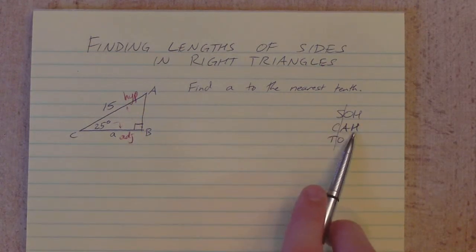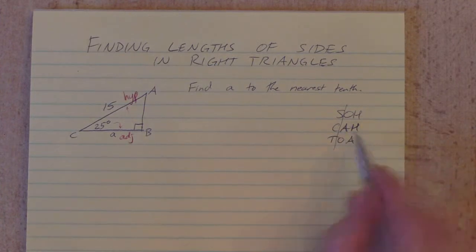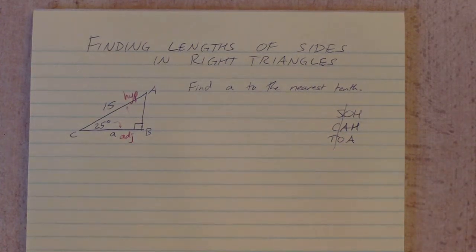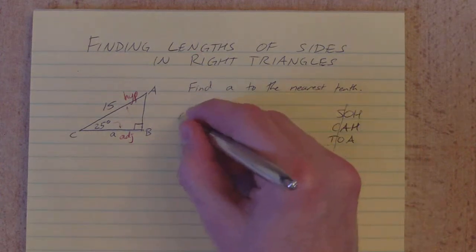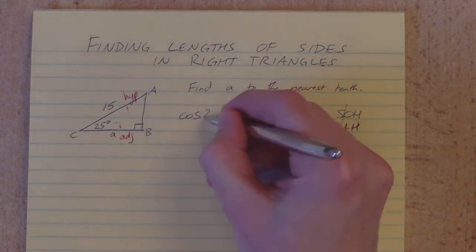So I look at my trig ratios and I find which one has adjacent and hypotenuse. That one is cosine. So I'm going to have to set up a cosine ratio here. Cosine of that angle I was working with here, 25 degrees,